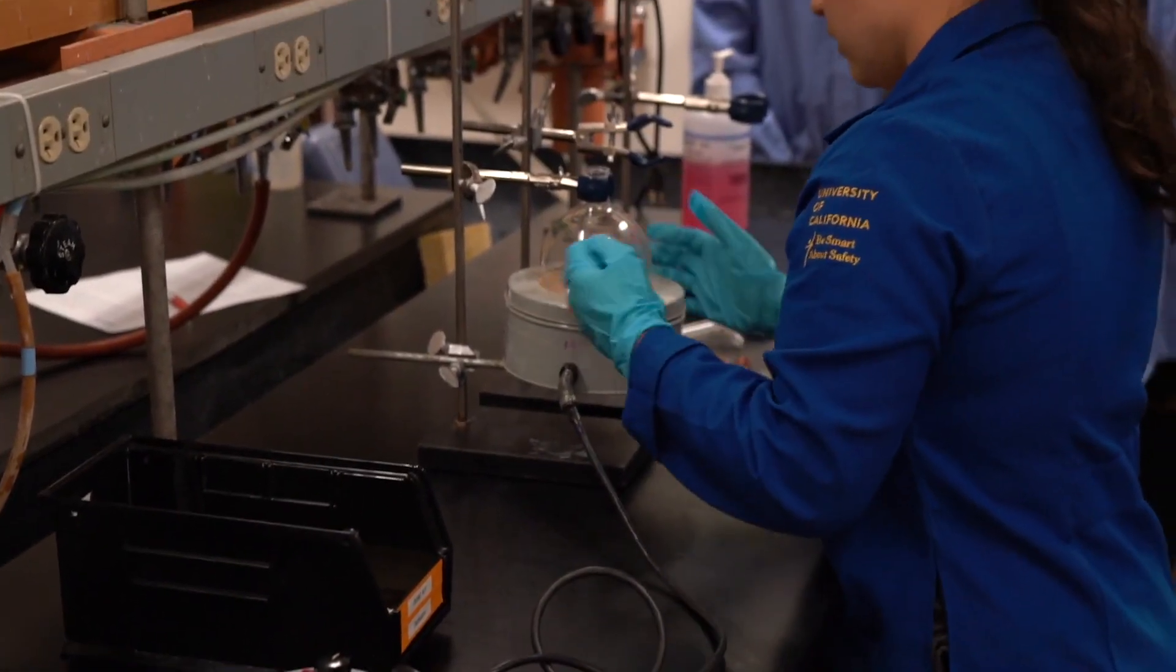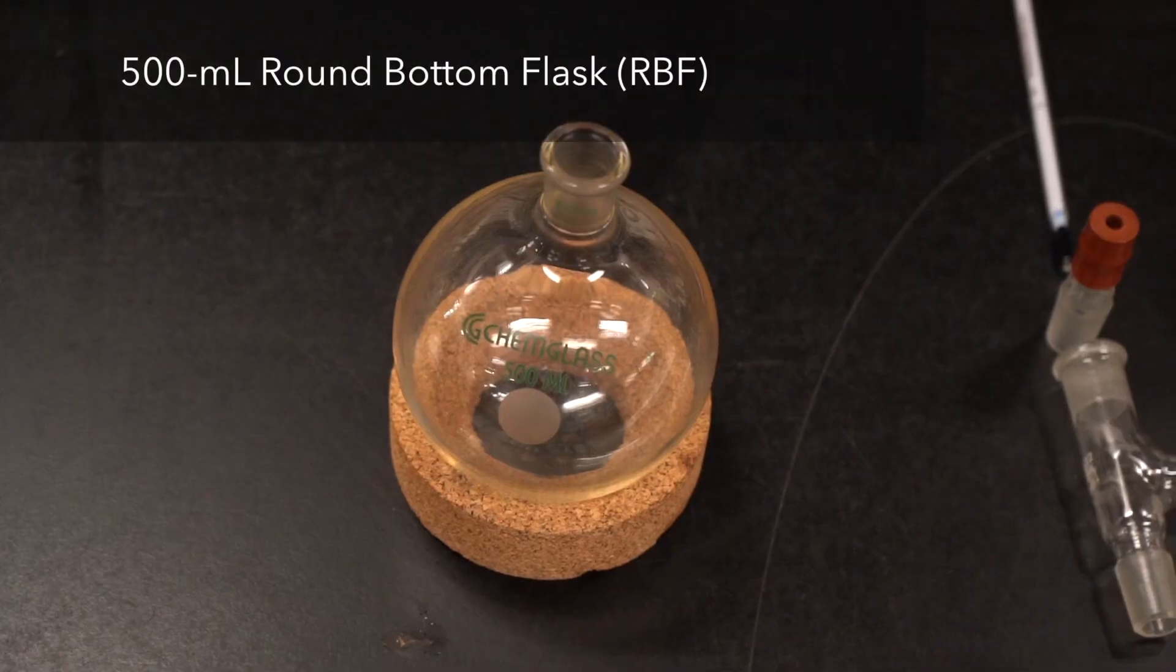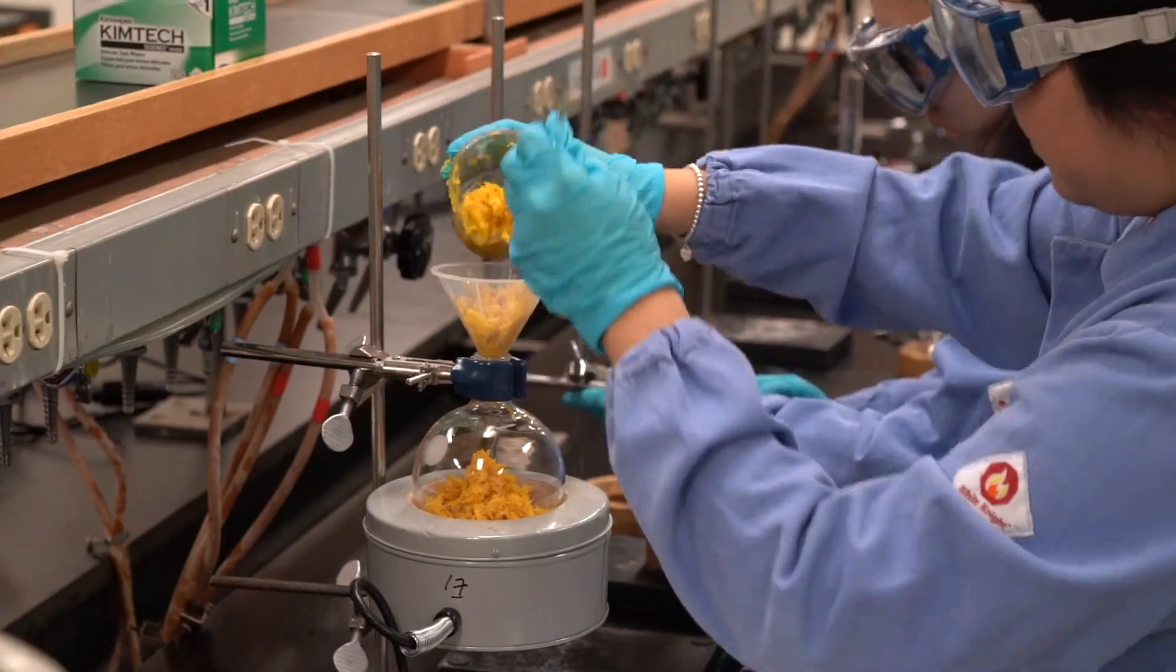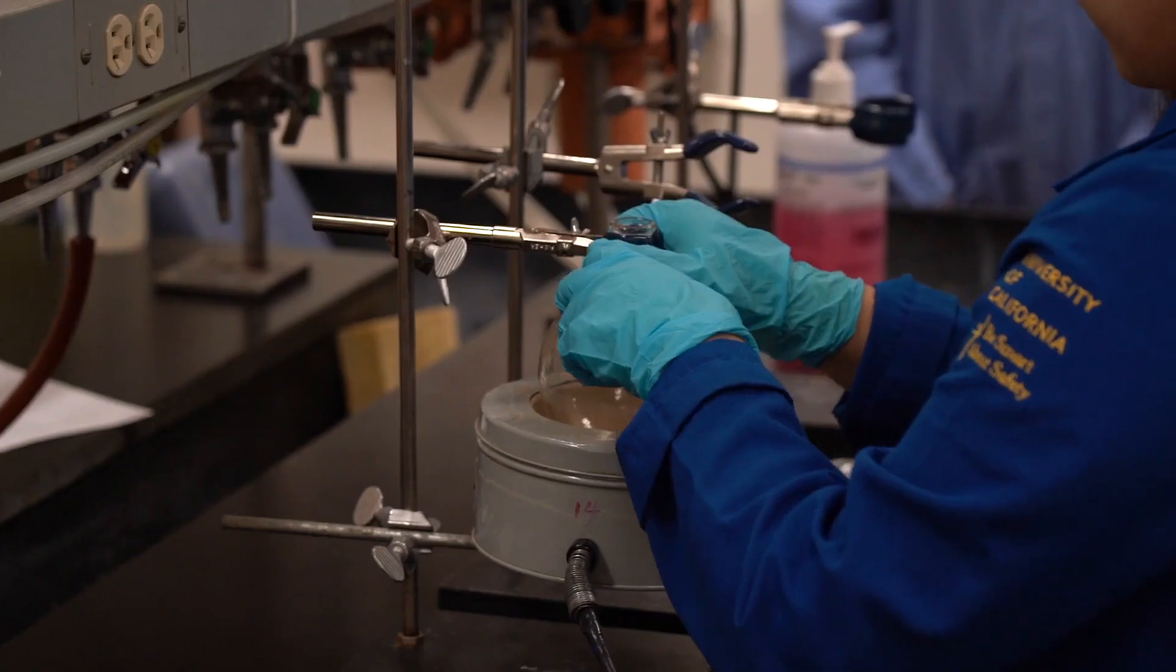Then you're going to attach your 500ml round bottom flask. You want to add in beforehand your water and your citrus peel. Clamp it.